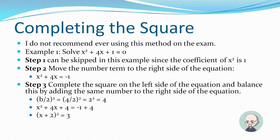Step three: complete the square on the left side and balance by adding the same number to the right side. We take b divided by 2, squared: 4 divided by 2 squared equals 2 squared equals 4. So x squared plus 4x plus 4 equals negative 1 plus 4, which gives us (x plus 2) squared equals 3.